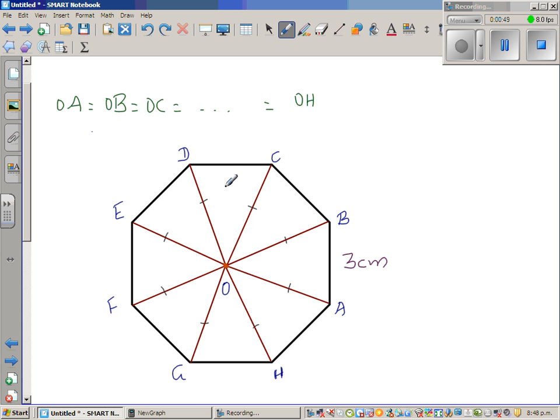So if you want to find the area of this octagon is same as finding the area of triangle AOB times 8. 8 times the area of one triangle will give you the area of the octagon. So let's write that area of octagon, area of this octagon is nothing but 8 times area of one triangle, any one triangle.